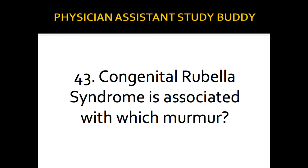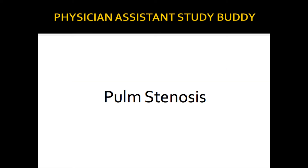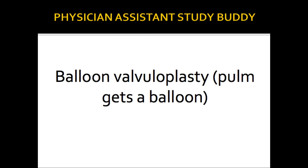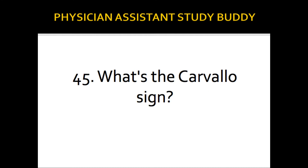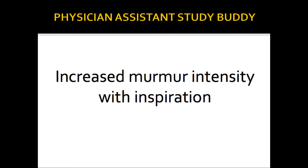Congenital rubella syndrome is associated with pulmonary stenosis. Pulmonary stenosis treatment is balloon valvoplasty — pulmonary gets a balloon. The Carvallo sign is an increase in murmur intensity with inspiration.